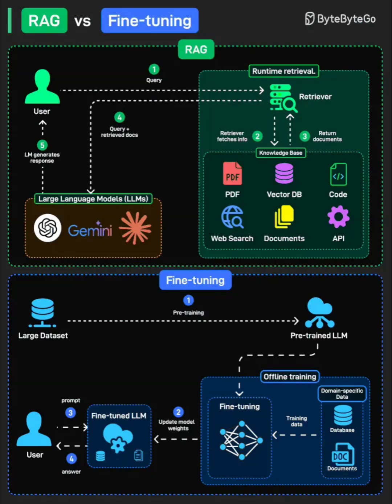What is RAG? Let's start with RAG, or Retrieval Augmented Generation. Think of it as giving your LLM a dynamic library it can reference in real time. Here's how it works: when a user sends a query, the system fetches relevant information from your knowledge base.